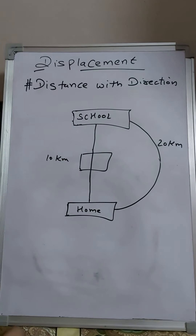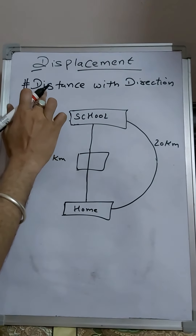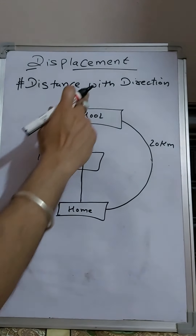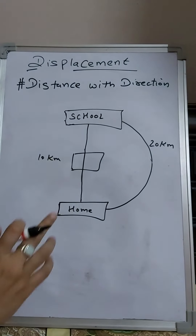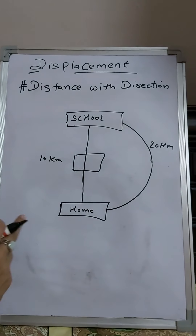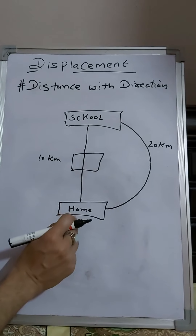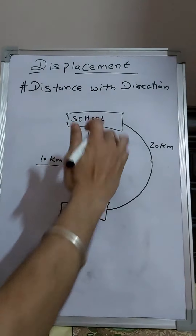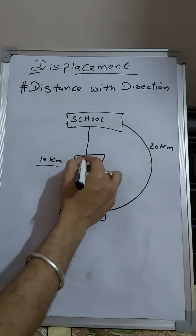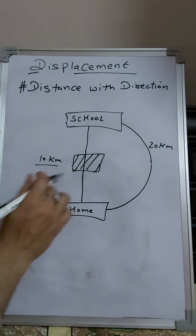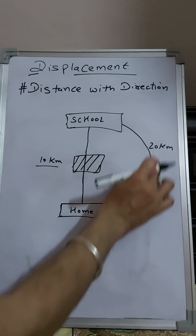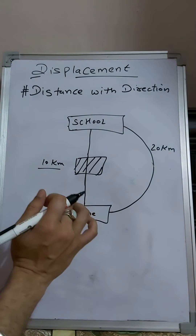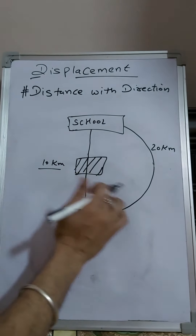Now we will discuss displacement. Displacement is distance with direction — you are dealing with a distance that has a particular, specific direction. Let's reconsider the earlier example: you have to go from home to school, which is 10 kilometers in a straight path, but due to construction you have to follow a detour.